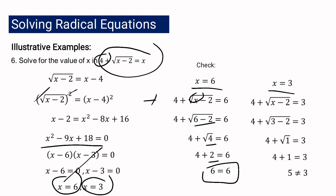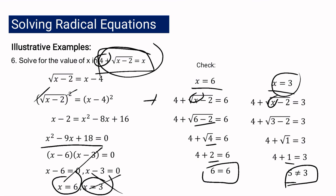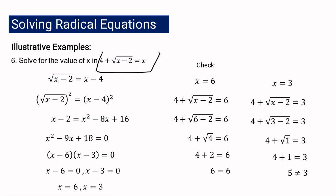For x equals 3: substituting gives 3 minus 2 equals 1, the square root of 1 is 1, and 4 plus 1 is 5. But 5 does not equal 3, meaning x equals 3 does not satisfy the original equation. Therefore, 3 is an extraneous root. Even though we arrived at two values of x, after checking, only x equals 6 is the solution to the radical equation 4 plus square root of (x minus 2) equals x.